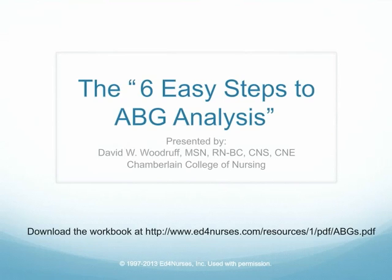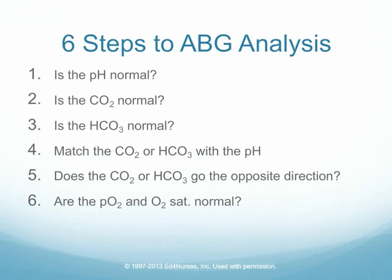Hello and welcome to the six easy steps to ABG analysis. In this program we are going to go through the normal values for blood gases, abnormal values, and interpret some blood gases to give you some practice with the major components of an arterial blood gas. So let's get started. The arterial blood gas was drawn from the patient, and now we're going to take a look at the results and try to determine what we can find out about both the acid-base balance and the oxygenation for this patient.